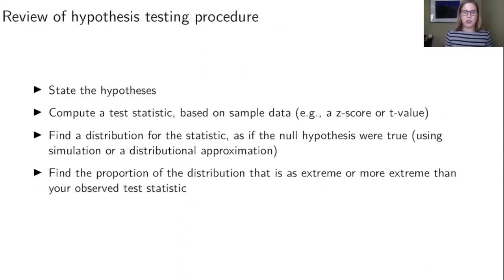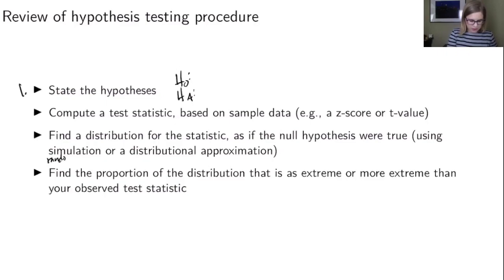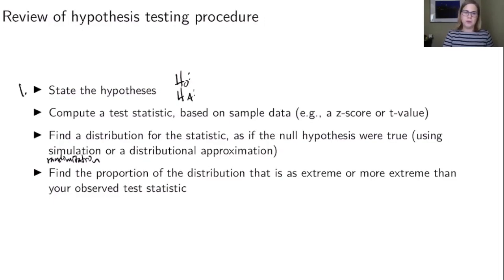Let's remember our general steps for a hypothesis test. Our first step is always to state the hypotheses — writing out H0 and HA. Then we compute a test statistic based on sample data; so far we've seen making a z-score or a t-value. Then we find a distribution for the statistic as if the null hypothesis were true, using either simulation (randomization) or a distributional approximation like a normal or t-distribution. Then we find the p-value — the proportion of the distribution as extreme or more extreme than the observed test statistic. We're going to do these same steps but for many means.